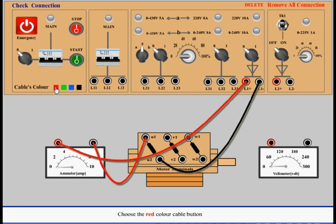Choose the red color cable button. Connect L1 positive to the positive terminal of M meter.